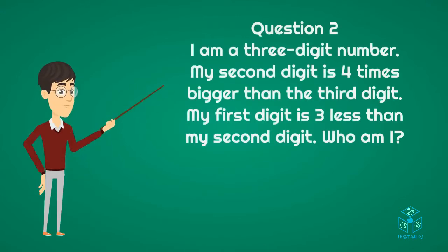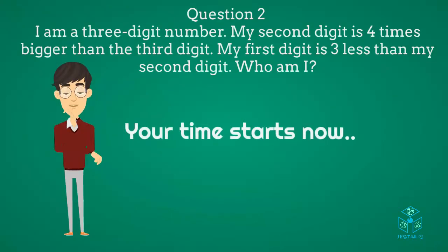Question 2. I am a 3-digit number. My second digit is 4 times bigger than the third digit. My first digit is 3 less than my second digit. Who am I? Your time starts now.